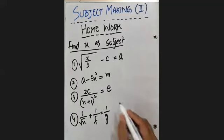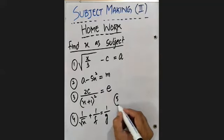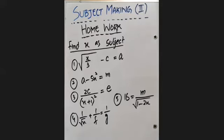Question number 4: 1 over under root x plus 1 over f equals 1 over g. And the last question number 5 is: 16 equals m divided by 2x. Yes, this is your homework: 1, 2, 3, 4, 5 questions we have.